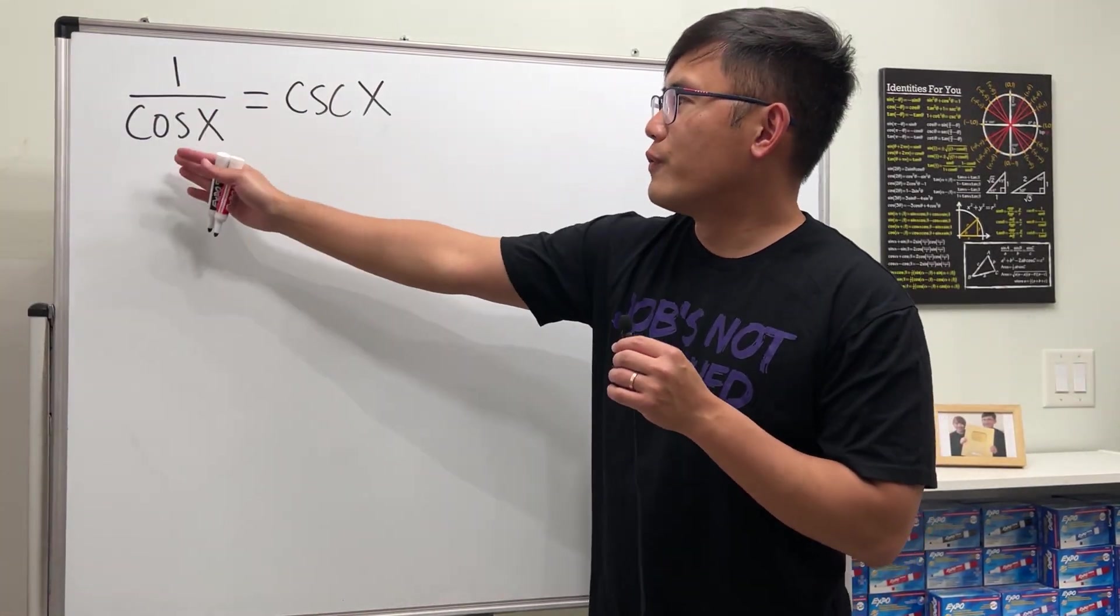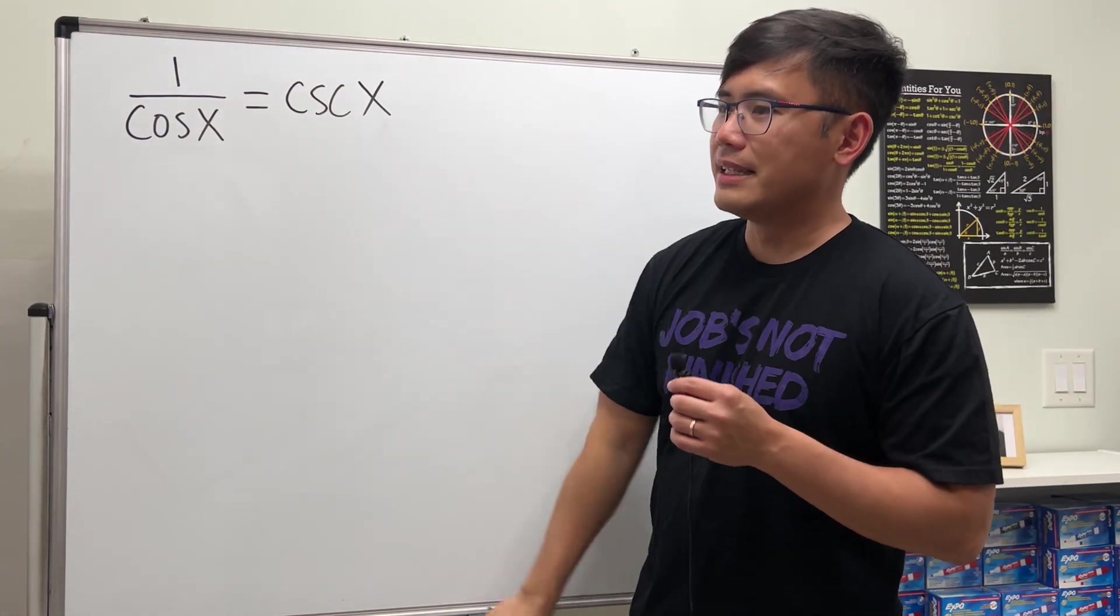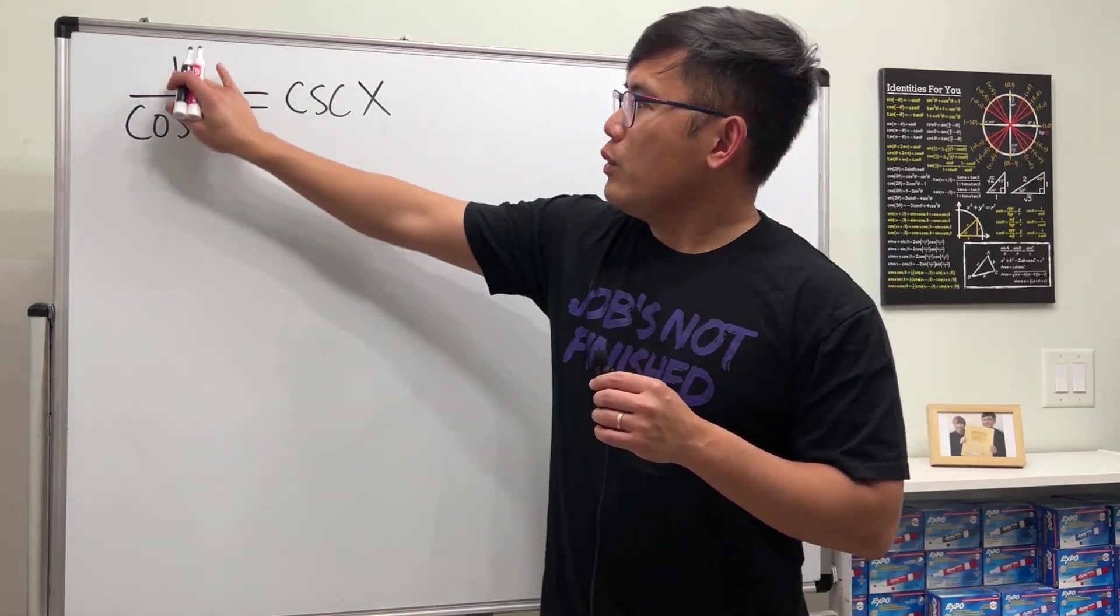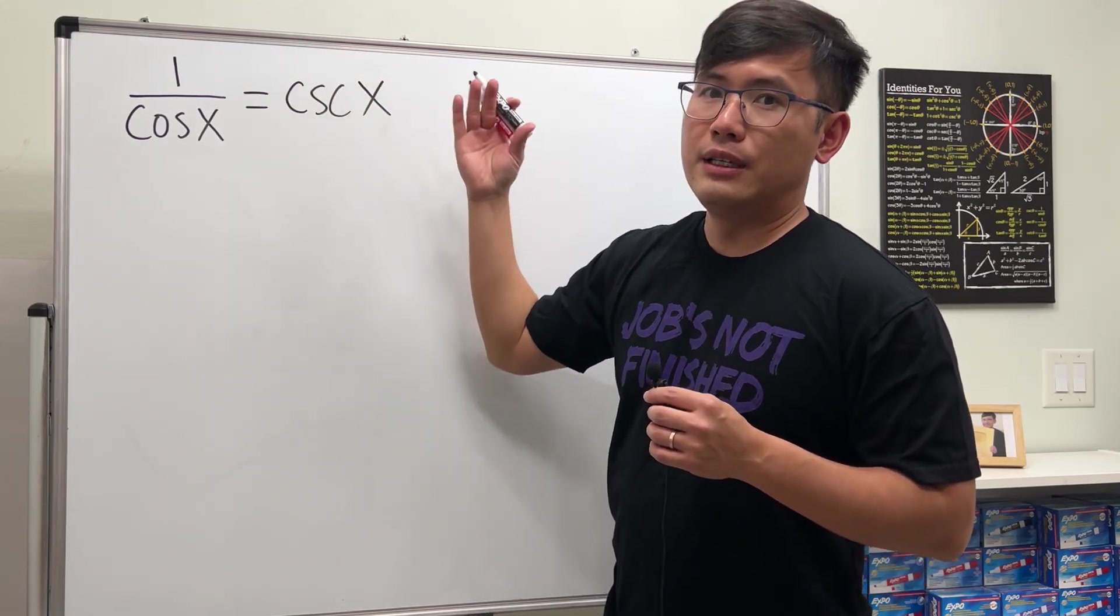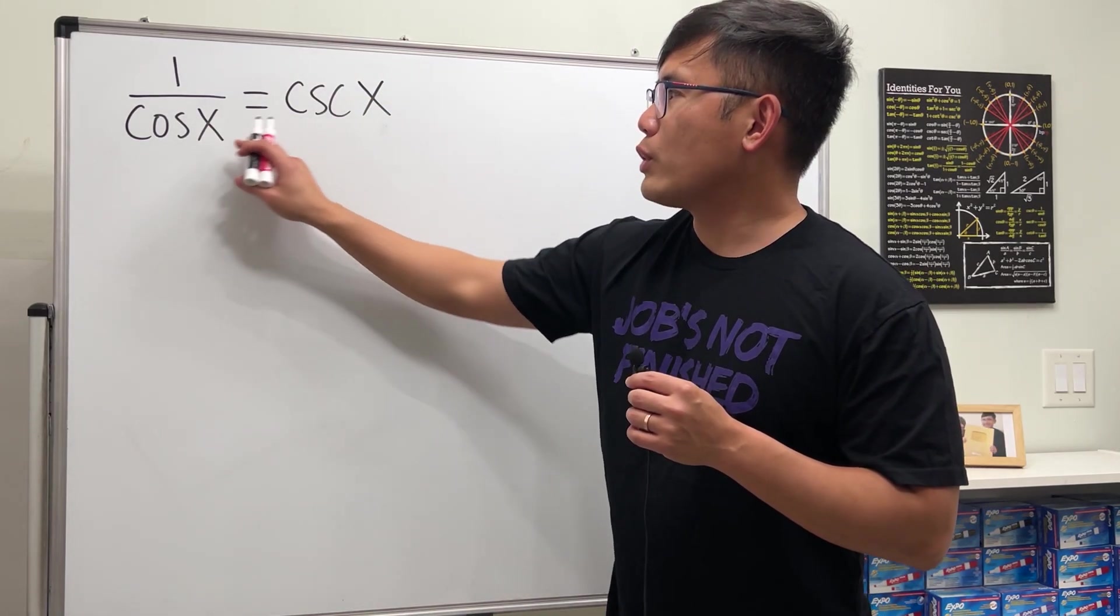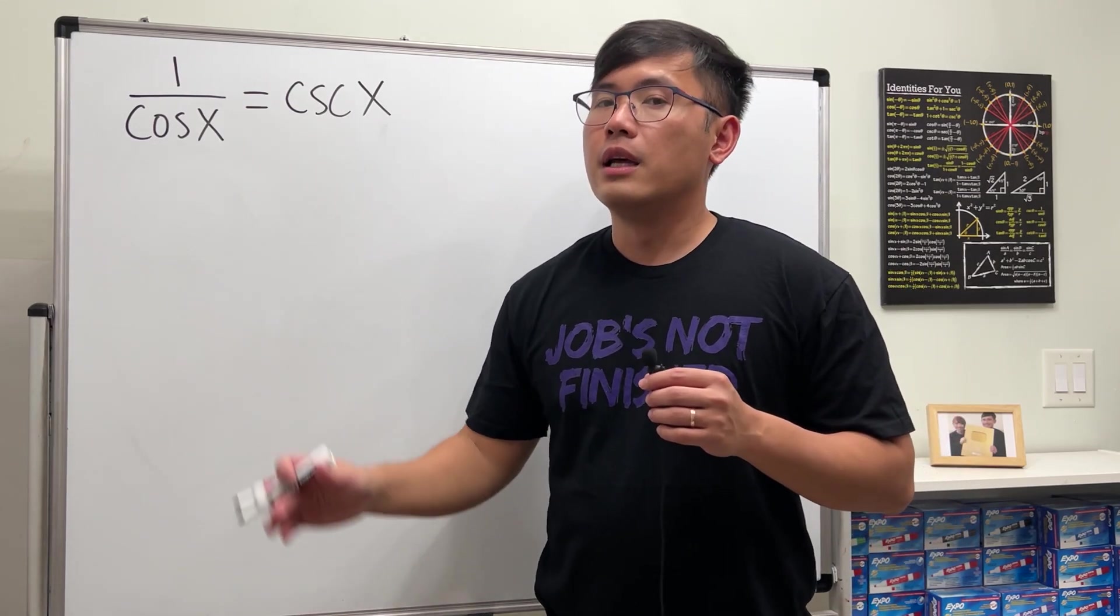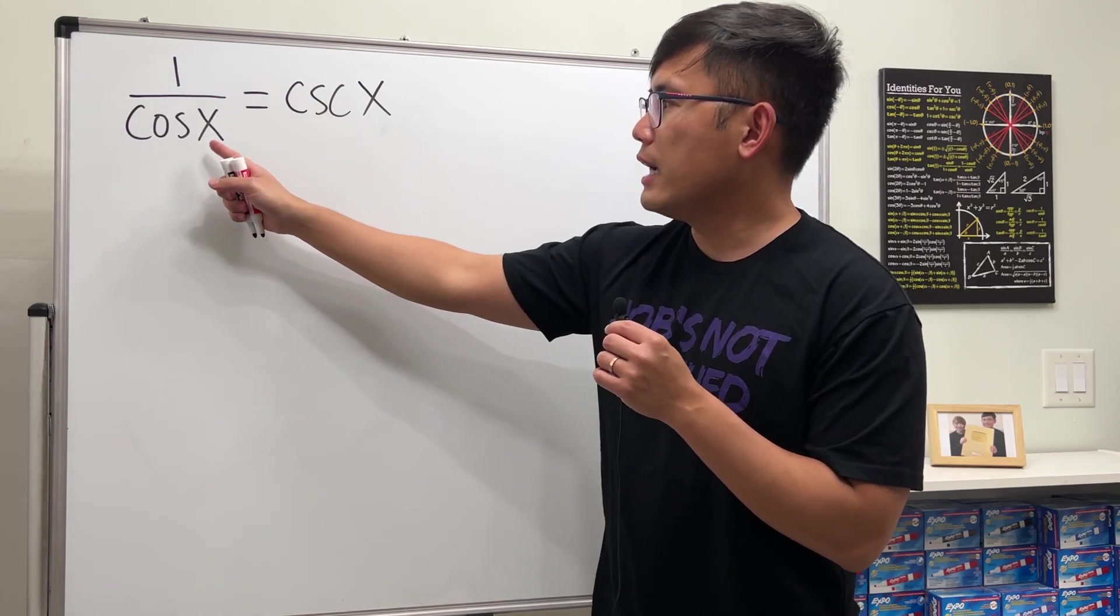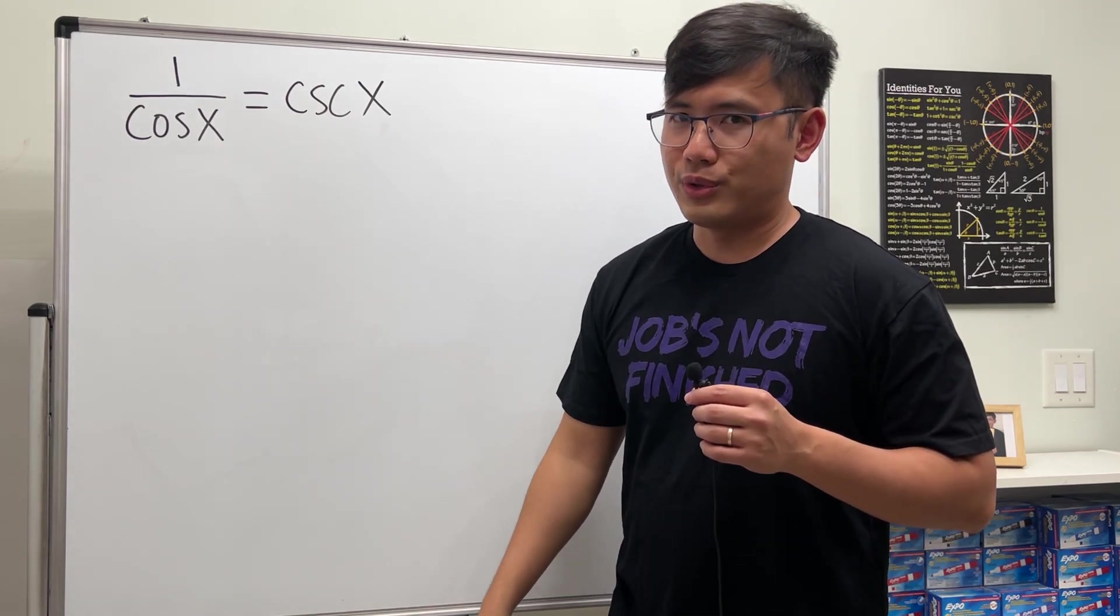I'm pretty sure that when you see 1/cos(x) = csc(x), you will be like, how is this even possible? Because we know 1/cos(x) should have been sec(x), right? But don't worry, this right here is not an identity, but actually a good equation, meaning we can find some x values to make this equation true.